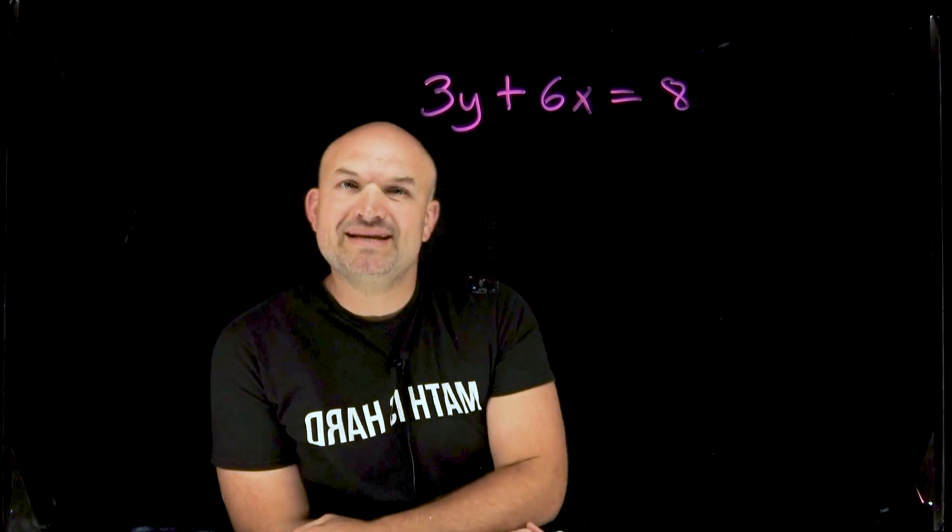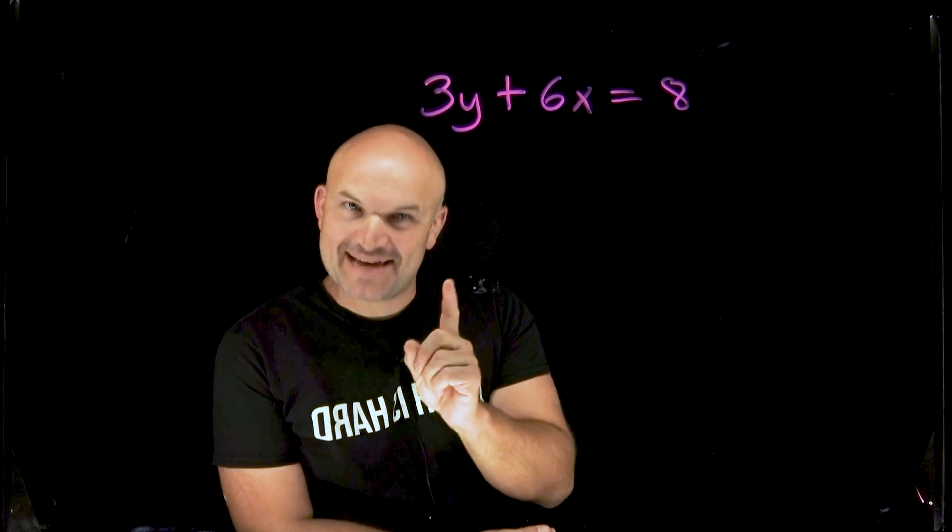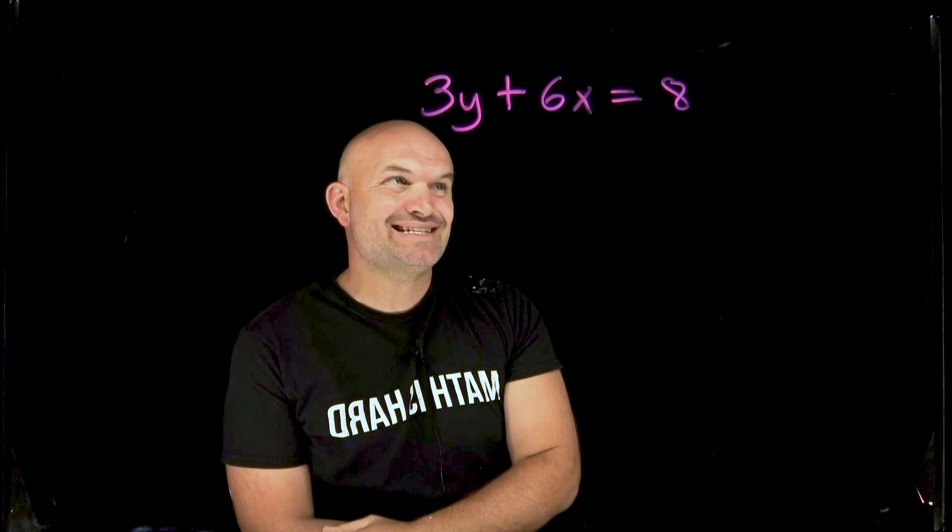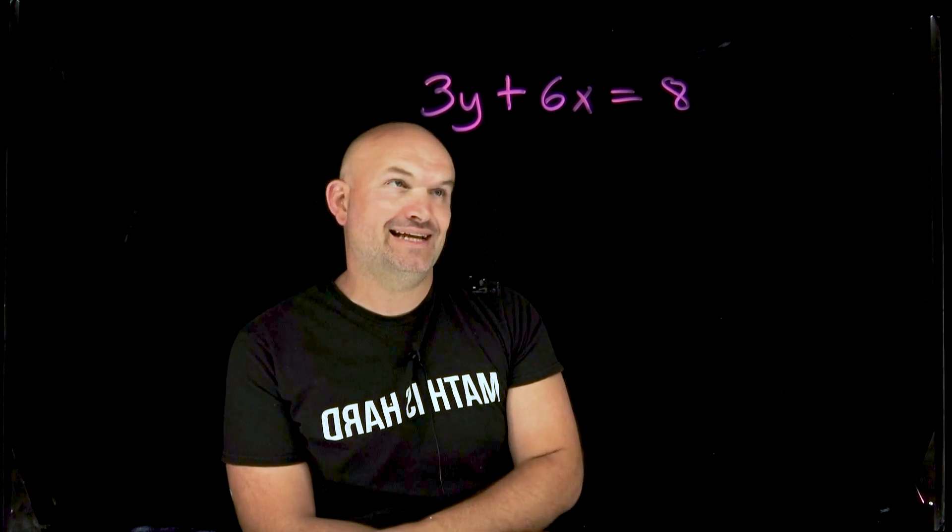In this video I want to go over three common mistakes that students make with slope as well as give you a tip that you can use to your advantage. So in this case we have 3y plus 6x equals 8. Now this is a linear equation that is going to be in standard form.